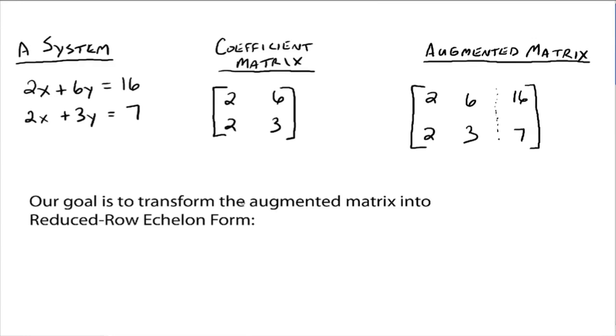Alright, so we're going to go back and forth. Now, our goal is to take this augmented matrix, and write it in what's referred to as reduced row echelon form. And that looks like this. 1, 0, 0, 1.